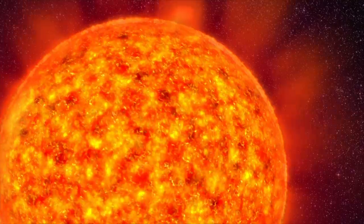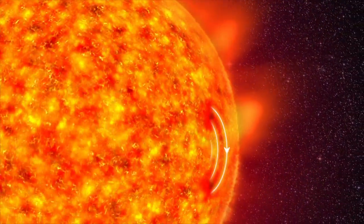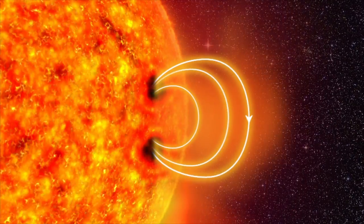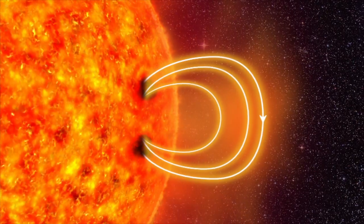In some places, strong magnetic fields push their way up through the surface. They slow down the eddies of hot gas. The surface cools, and darker sunspots appear.